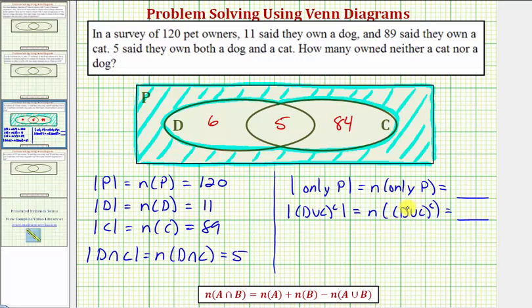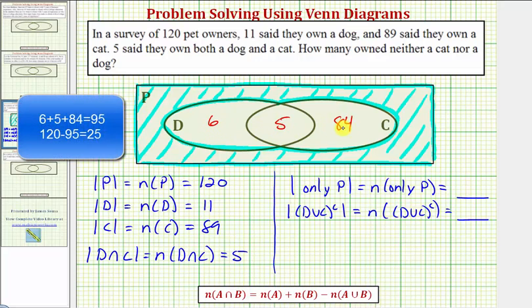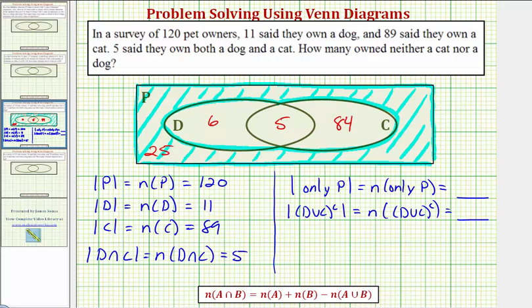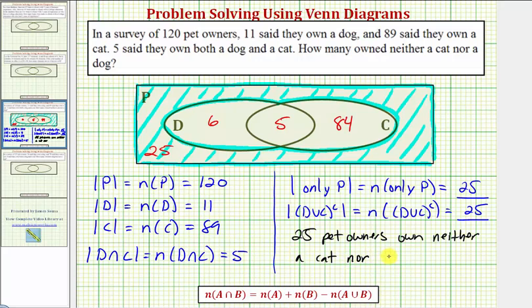To answer our question, we've accounted for six plus five plus eighty-four elements. Six plus five plus eighty-four equals ninety-five, so there are ninety-five elements in D and C combined. Because set P contains one hundred twenty elements, one hundred twenty minus ninety-five equals twenty-five. There'd have to be twenty-five elements in P that are not in D or C, which means there are twenty-five owners that own neither a cat nor a dog.